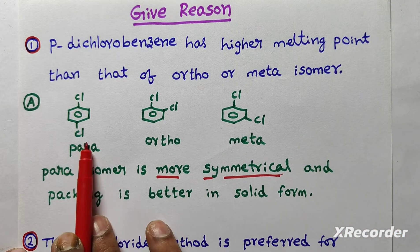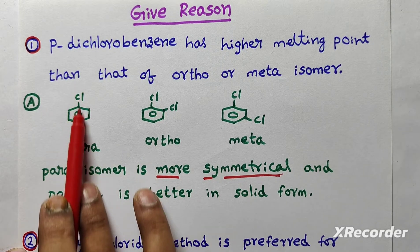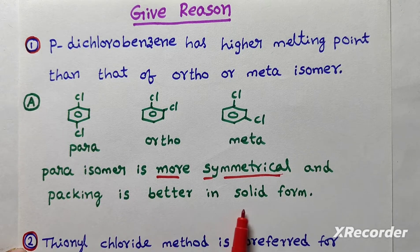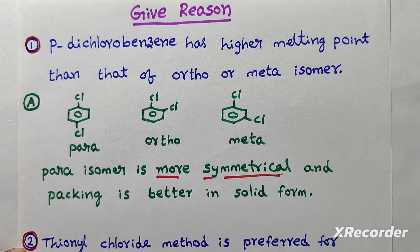Ortho, meta, para. In these three isomers, para isomer is more symmetrical. So packing is better in solid form. That's why para-dichlorobenzene has higher melting point.